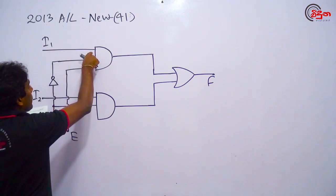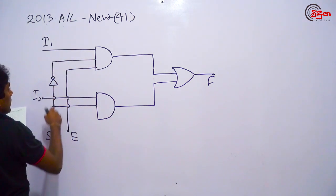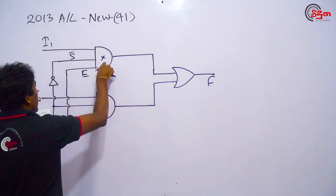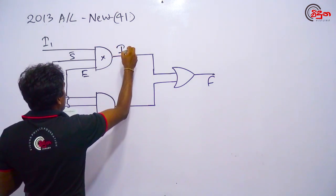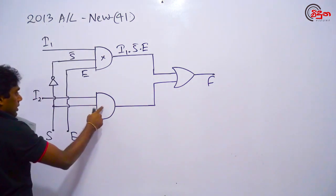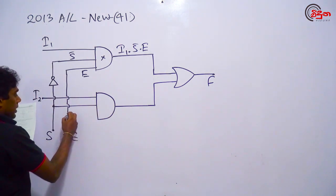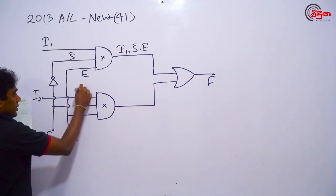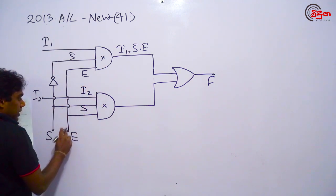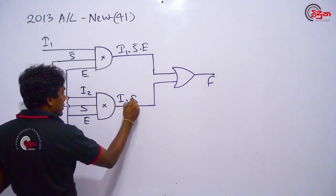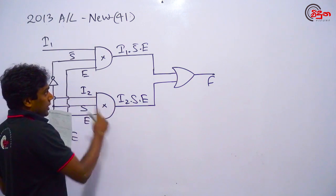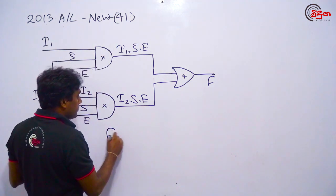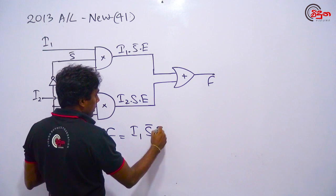This one is S bar. This one is I1 dot S bar dot T. This one is S bar dot T. This can be used again. i2 is S i1 by E O.